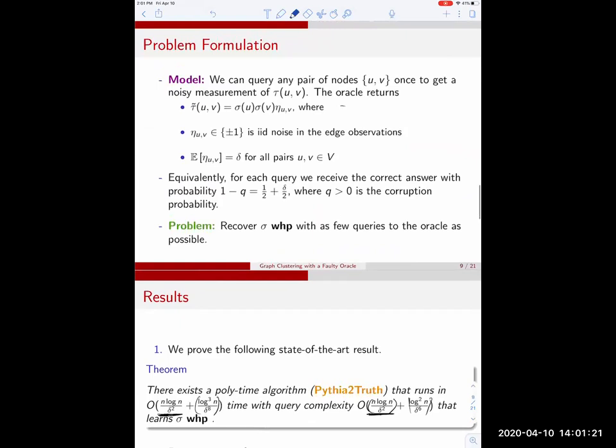The probabilistic model is that we can query any pair of nodes exactly once. We assume that if you query multiple times you get the same answer. We can query any pair of nodes exactly once to get a noisy measurement that we call tau tilde uv. This is the true sign of the interaction sigma u times sigma v, which is exactly tau uv times this eta uv random variable which models the noise. If it's plus one we get the correct answer about whether u and v belong to the same cluster. But if it's minus one we get the wrong answer.